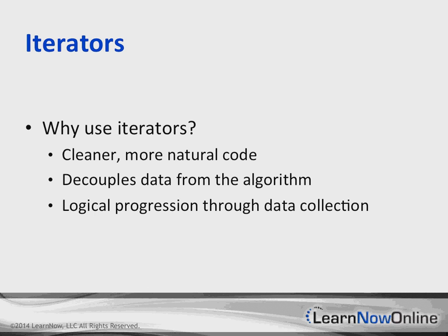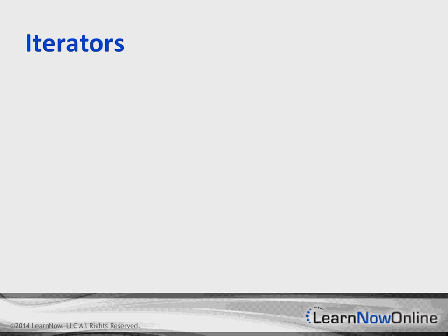It's a logical progression through the data collection. One of the main reasons for that is it gives you a lot of control over what's returned and when you can stop it. You're also not going to run into issues with infinite loops or those kinds of bugs in your code. Now that you have a good idea of what iterators are, let's jump into the code.